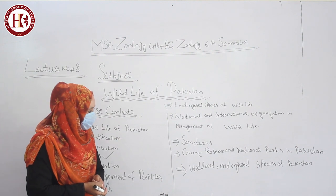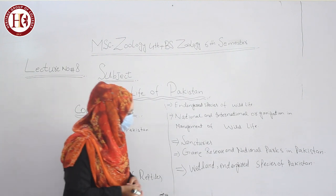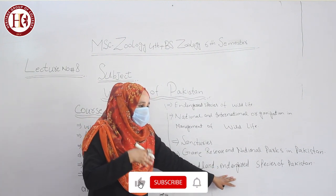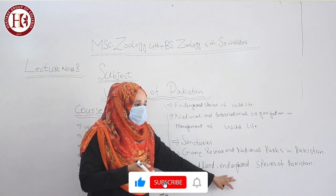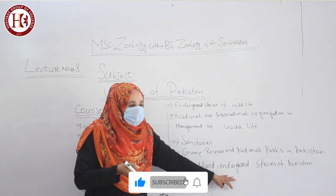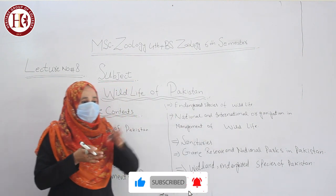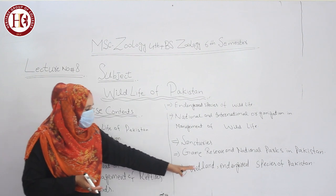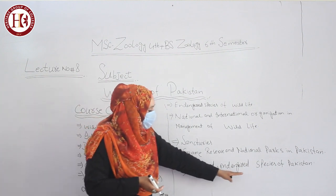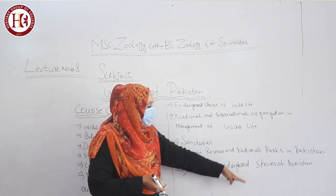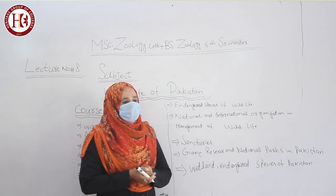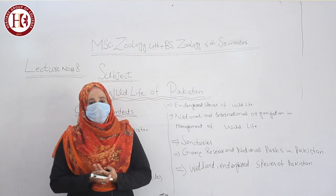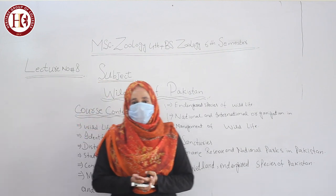The last topic in this section is wetland endangered species of Pakistan — covering wetland areas, rural areas, seas, oceans, and coastal zones. Which species are most endangered in Pakistan's wetlands and how do you protect them? That concludes the overview for lecture number 8.